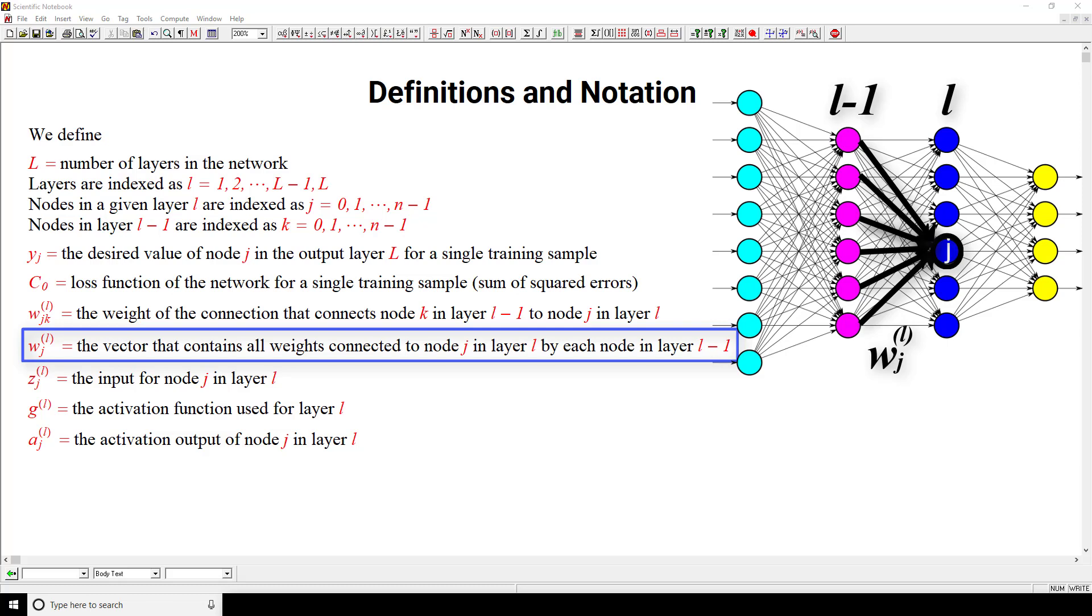So we can see by our illustration here how this definition differs from the last one that we just defined. The last one was for one specific weight that connected two nodes in two separate layers together. And the definition that we just gave is an accumulation in vector format that contains all the weights connected to this specified node j in layer l by each node in the previous layer l minus 1.